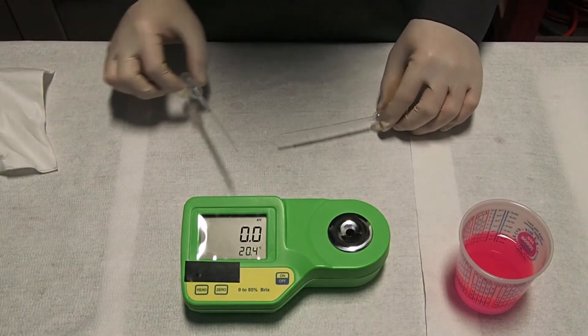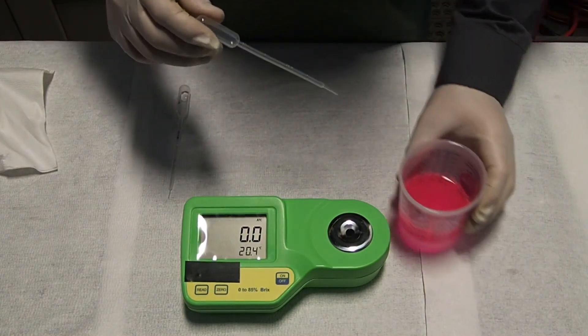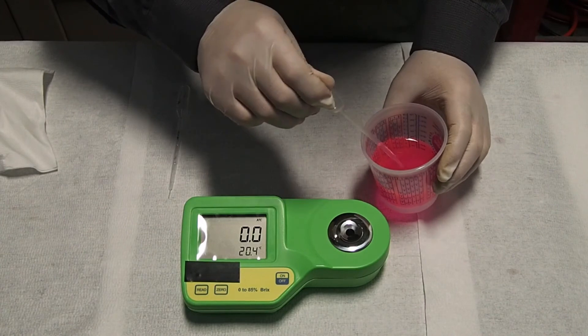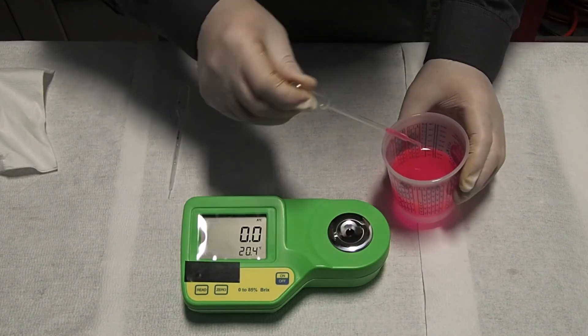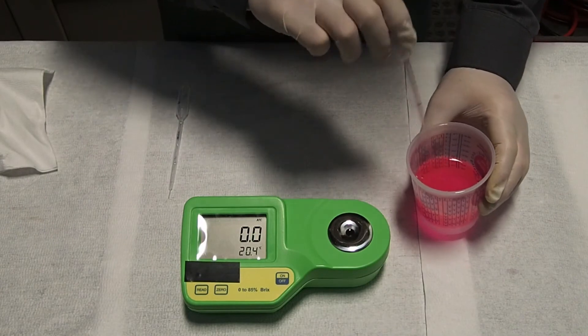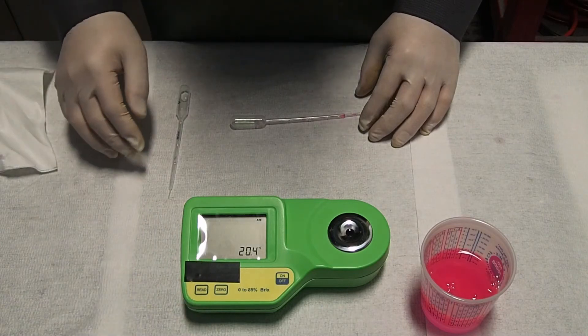We are not going to use the same one for the emulsifier. For that, this one will be used to get some drops of emulsifier into the window sample. After that, push the read key and the refractometer will give us